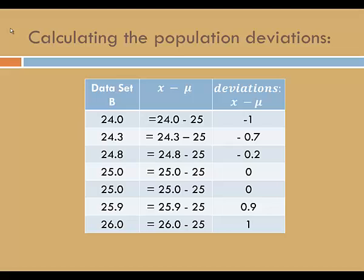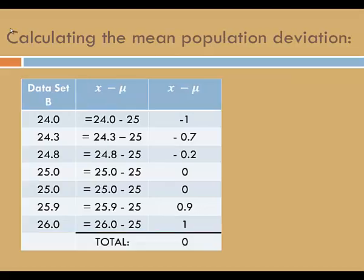Let's calculate the deviations for data set B. Recall that a deviation is the difference between a data value and the mean. Take the value 24 — the mean for data set B is 25, so the difference is negative 1. The next data value is 24.3; the difference between 24.3 and the mean, 25, is negative 0.7, and so forth. You might think that as a measure of spread, we could take the mean of the deviations. But look at the total of the deviations column — it's 0. As it turns out, the total of the deviations column will always equal 0, so any time you try to take the mean of the deviations, you'll just get 0.